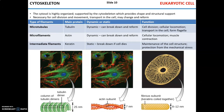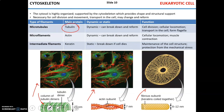Three types of filaments comprise the cytoskeleton: microtubules, microfilaments, and intermediate filaments. Microtubules consist of the protein tubulin and are dynamic — they can break down and reform. The main functions of microtubules are cell division, locomotion, and intracellular transport. They act like little railroads that allow vesicles to move inside the cell, and they also form flagella.